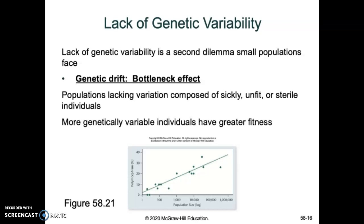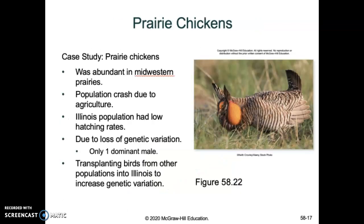Illinois example: prairie chickens. We used to have prairie chickens all across the Midwest, but their population crashed because of agriculture. Illinois' population crashed and genetic diversity declined dramatically — they had horrible reproductive rates, babies wouldn't hatch because there was no genetic variability. We reintroduced prairie chickens from other populations outside of Illinois, increased genetic variation, and hatching rates shot up. Still trying to rebuild the population, but it shows genetic diversity is critical. We'll get into endangered species in the next lecture.